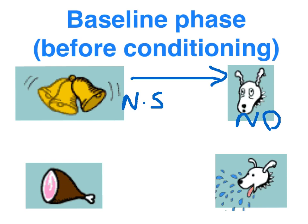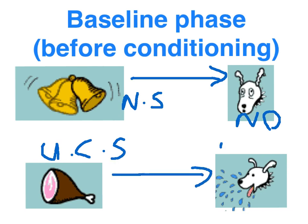Meat, on the other hand — when you present meat to a hungry dog, it reflexively salivates. So the meat was an unconditioned stimulus, which naturally elicited an unconditioned response. No learning required — a reflexive process controlled by the autonomic nervous system.